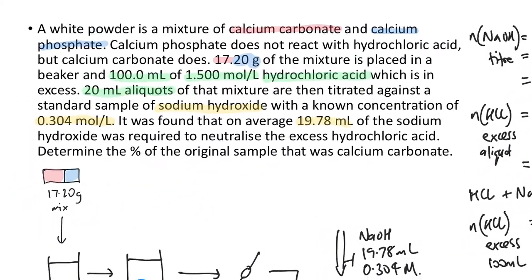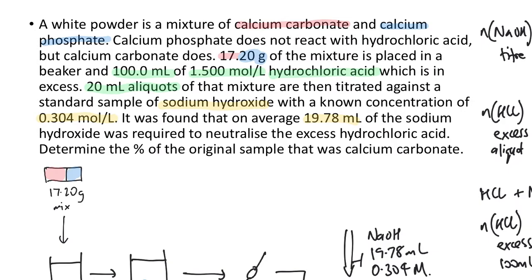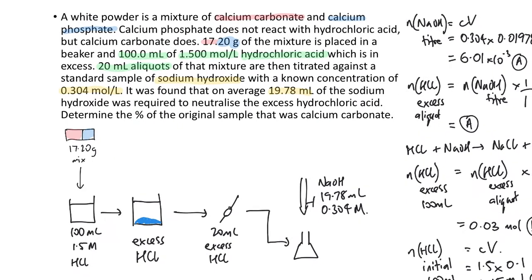Here's a worked example. A white powder is a mixture of calcium carbonate and calcium phosphate. In these titrations it's always useful to draw things out. The mixture weighs 17.2 grams, highlighted in different colours because it's a mixture — you can't use it until the end since you don't know how much is of which. We dump the mixture into 100 ml of 1.5 mol per litre hydrochloric acid, which is in excess. Calcium phosphate does not react with the hydrochloric acid, but the calcium carbonate does.